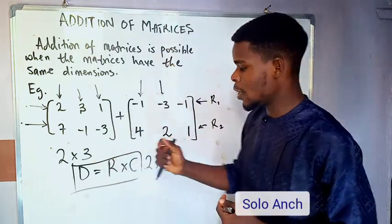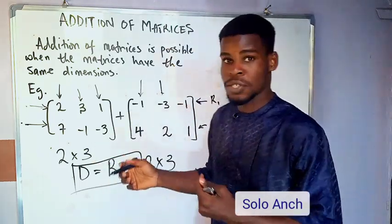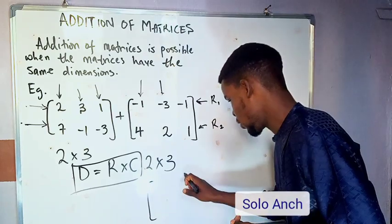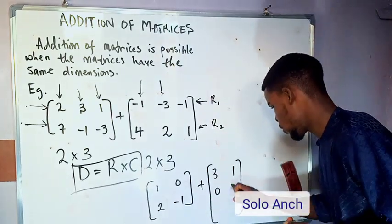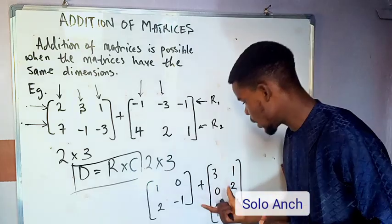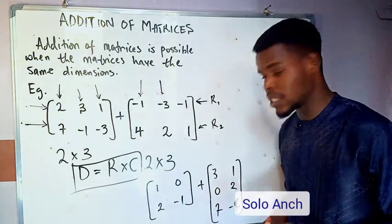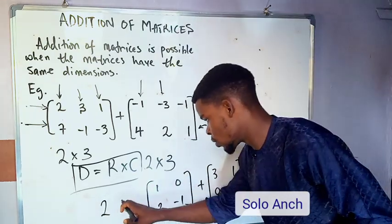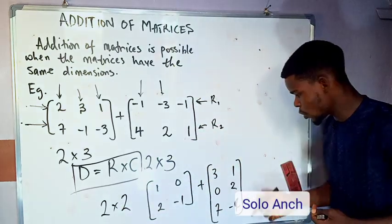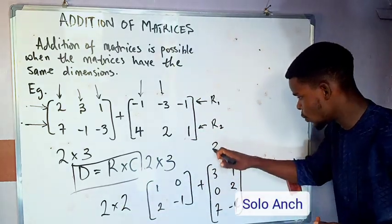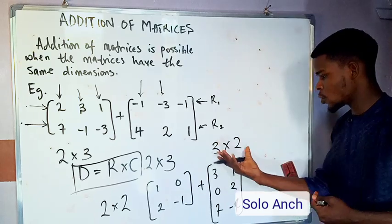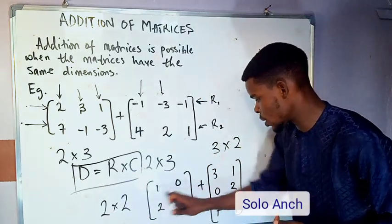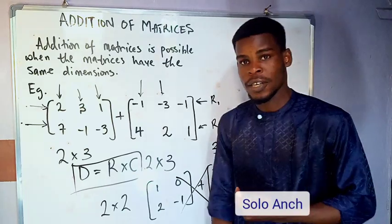Now, what happens when the dimensions are not equal? Here's a non-example of matrices that can be added. These matrices cannot be added together because they have different dimensions. One is 2×2, but the other has three rows and two columns — 3×2. Since the number of rows differs, these two matrices cannot be added together.